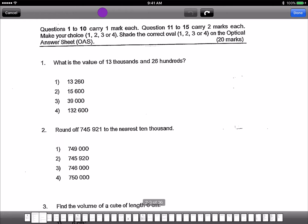So first question was the value of 13,000 and 2,600. So 13 times 1,000 that would be 13,000. Now what about 2,600? 2,600 is actually 2,600. So you add the two together, you get 15,600. So the answer has got to be 2.